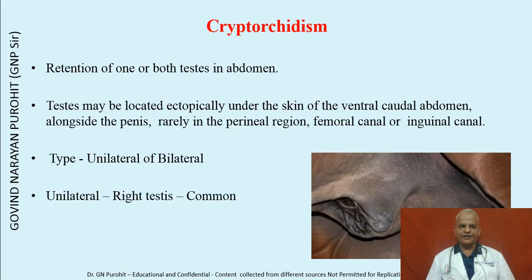Cryptorchidism is the retention of one or both testes in the abdomen. The testes may be located ectopically under the skin of the ventral caudal abdomen alongside the penis, rarely in the perineal region, femoral canal, inguinal canal, or rarely abdominal. It may be unilateral or bilateral; unilateral affecting the right testis is much more common. Males which are cryptorchid, since the condition is considered to be inherited, should be avoided for use in breeding.